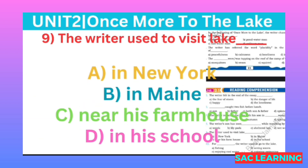Number nine: The writer used to visit the lake — it means where did the writer go to visit? (Musnif jheel ghumne jaate the, woh kahan par rehte?) Option A: in New York, B: in Maine, C: near his farmhouse, D: in his school. Correct option is B, in Maine. The U.S. has 50 states, and Maine is one of them.